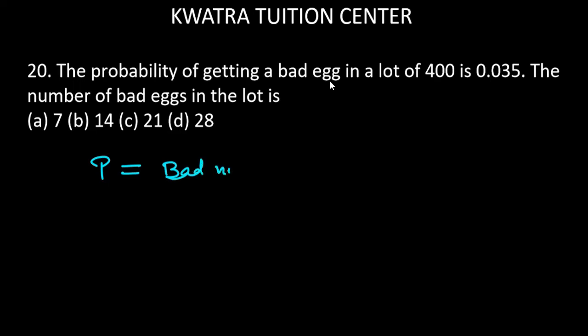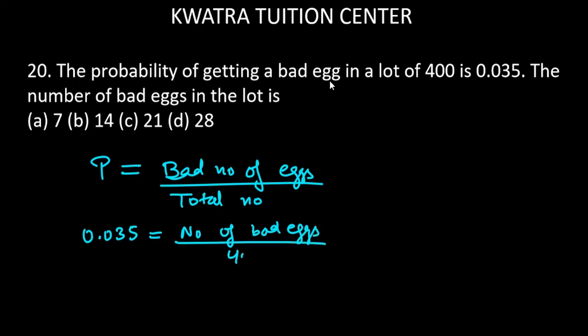The bad number of eggs is unknown. The total number is given to you, which is very simple. Probability will be 0.035. Bad number of eggs is not given, and the total number mentioned is 400.